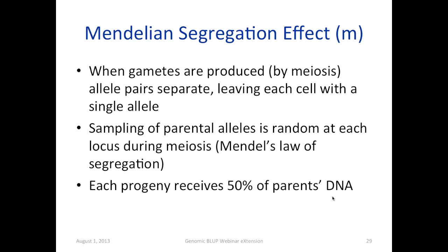What is the Mendelian segregation effect? When gametes are produced by meiosis, allele pairs separate, leaving each cell with a single allele. The sampling of parental alleles is random at each locus during meiosis — this is called Mendel's law of segregation. Each progeny receives about 50% of the parental DNA, and that 50% is randomly sampled. That's why sibs do not look alike.